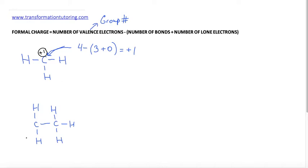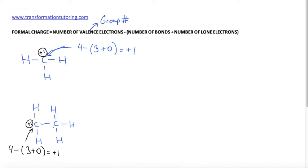Let's start with the carbon to the left. The carbon is in group 4, so it has 4 electrons. How many bonds is it attached to? It's attached to 1, 2, 3 bonds. And again, we do not see any lone electrons around it, so it has none — 0. 4 minus 3 is 1, and we get plus 1 formal charge for this carbon.